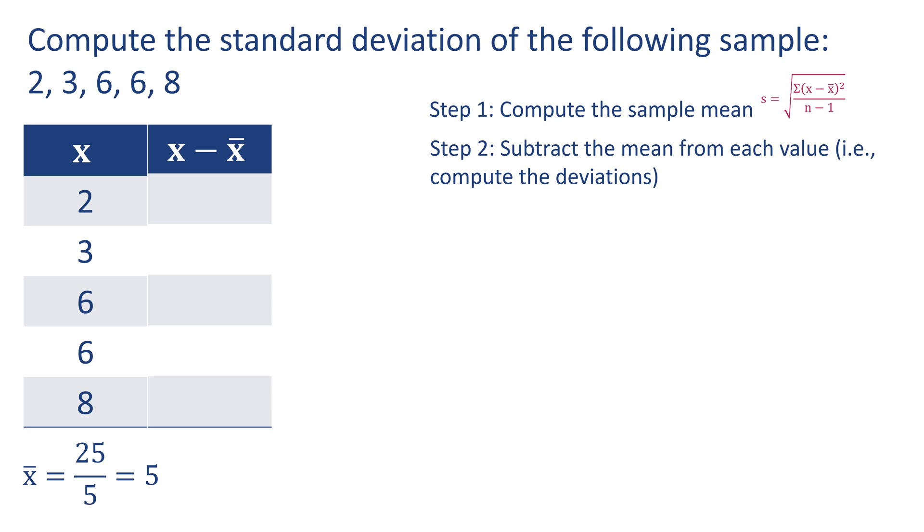For our first observation, 2 minus 5 equals negative 3. For the second observation, 3 minus 5 equals negative 2. 6 minus 5 equals 1, 6 minus 5 equals 1, and 8 minus 5 equals 3. These are what we call deviations. They're the difference between each observation and the sample mean.